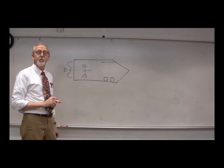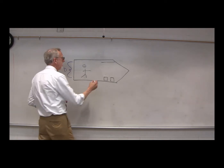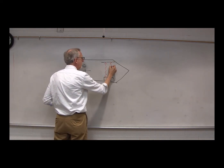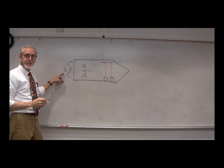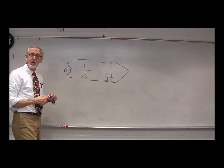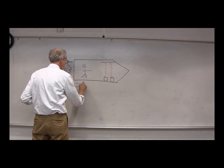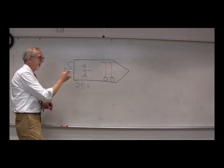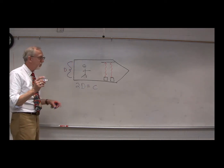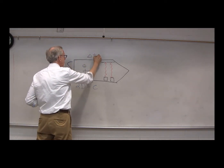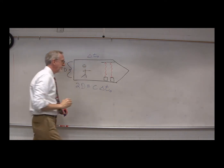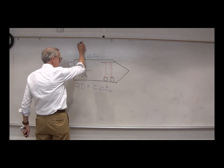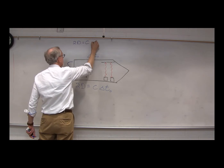Let's look at what happens in the frame of the rocket ship first. We have light going from the emitter up to the mirror, traveling a distance D, then from the mirror back down to the receiver, traveling another distance D. So the total distance traveled by the light in the frame of the rocket is 2D. With distance equals speed times time, we have 2D equal to the speed of light C times the time. The time measured by the person in the rocket was delta T naught, so: 2D equals C times delta T naught.